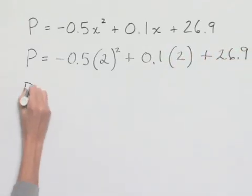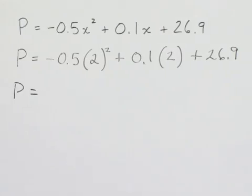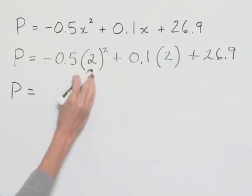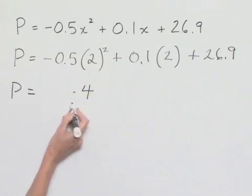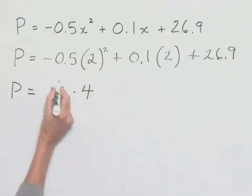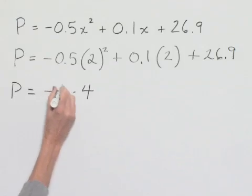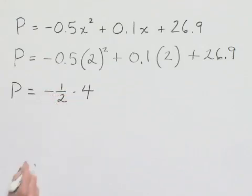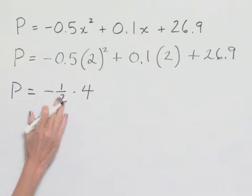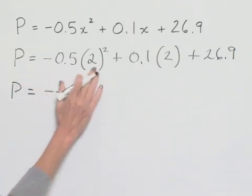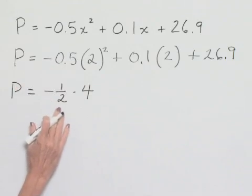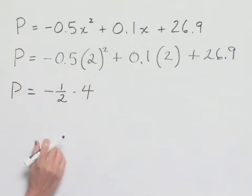Now we're going to use order of operations to evaluate this. Notice that we're going to apply the exponent power first. That would give us a 4. We're then going to multiply that times negative 5 tenths. I'm going to rewrite that as a fraction to make my multiplication easier. 5 tenths is the same as 1 half. So we'll have negative 1 half times 4.